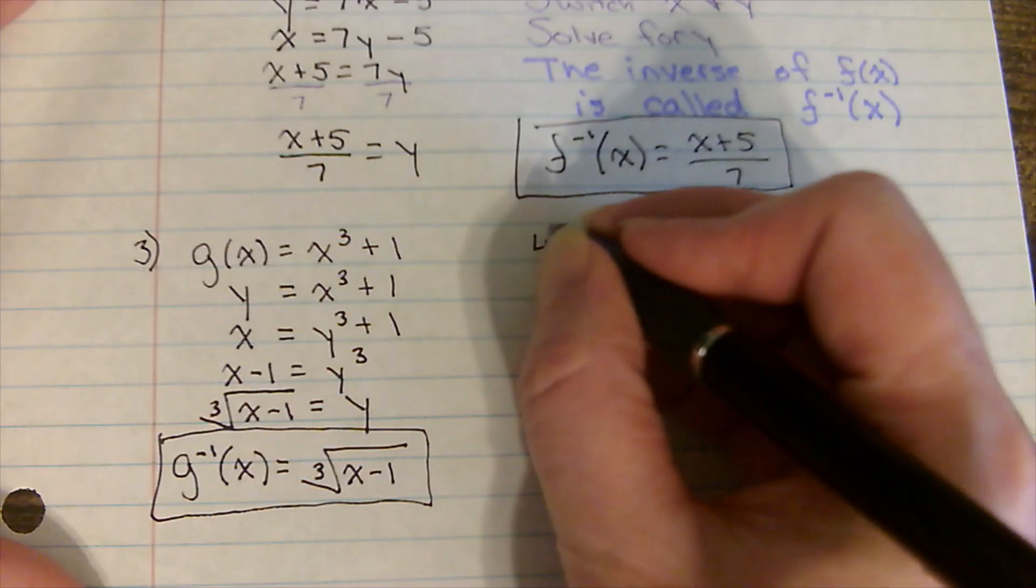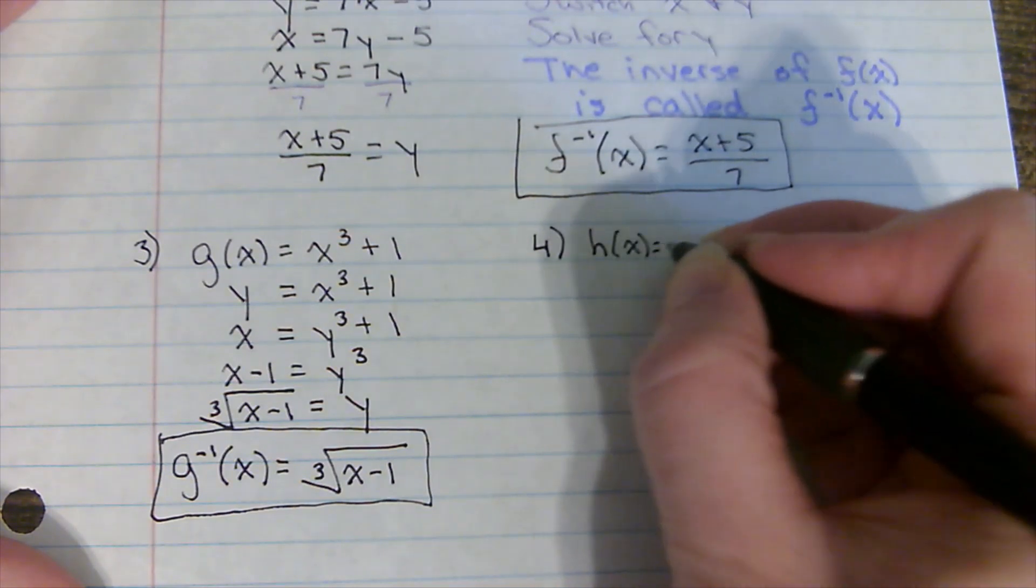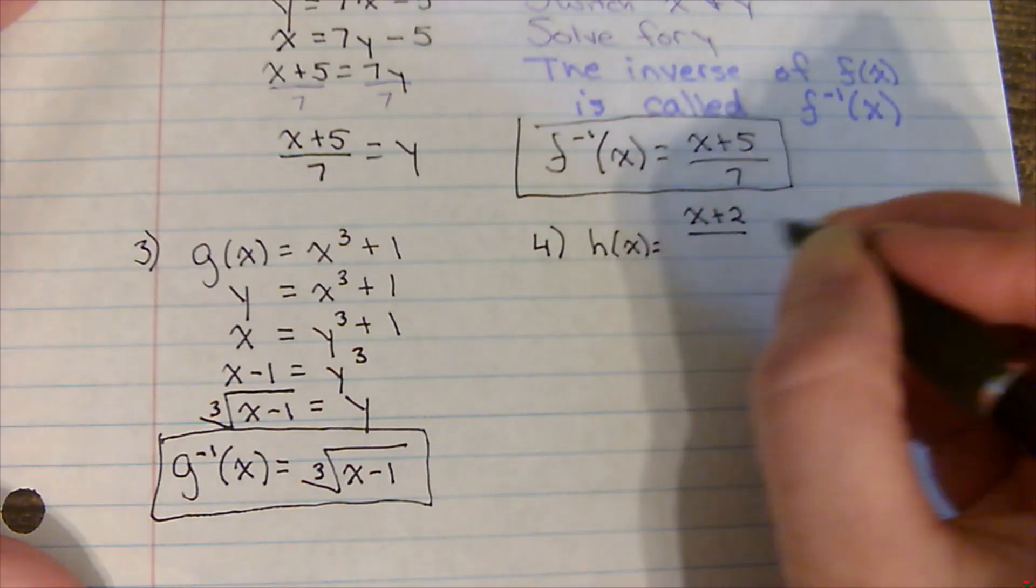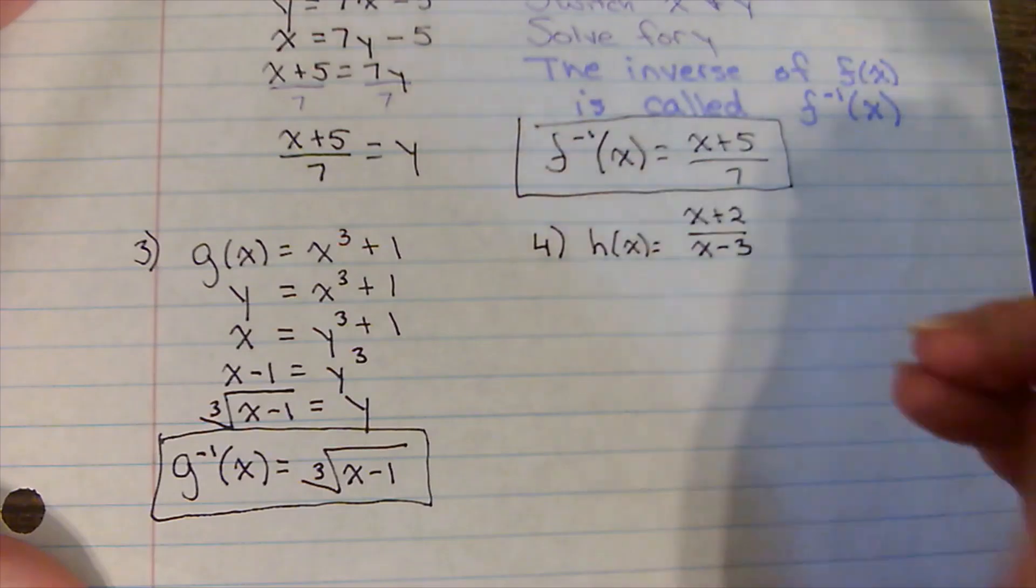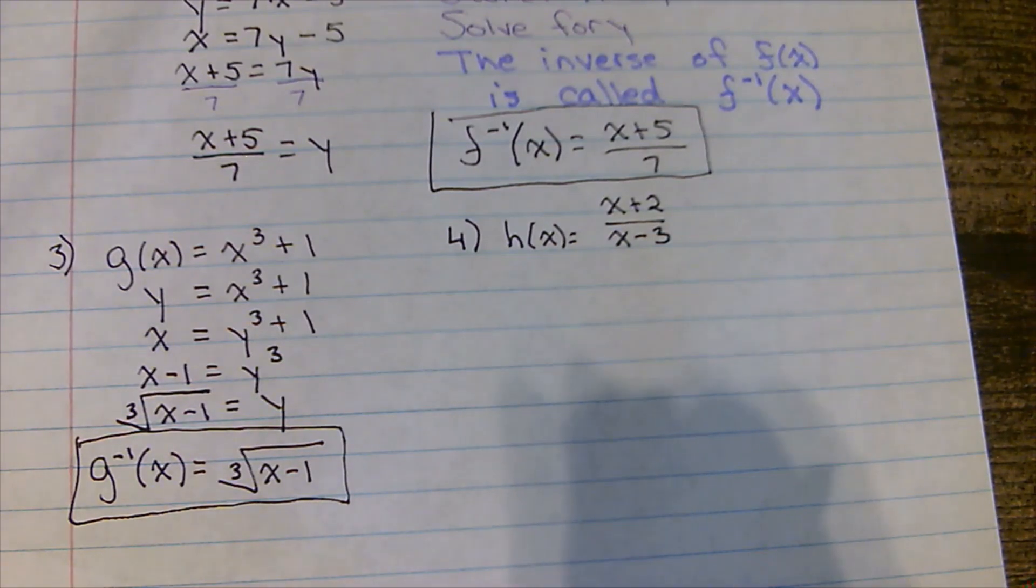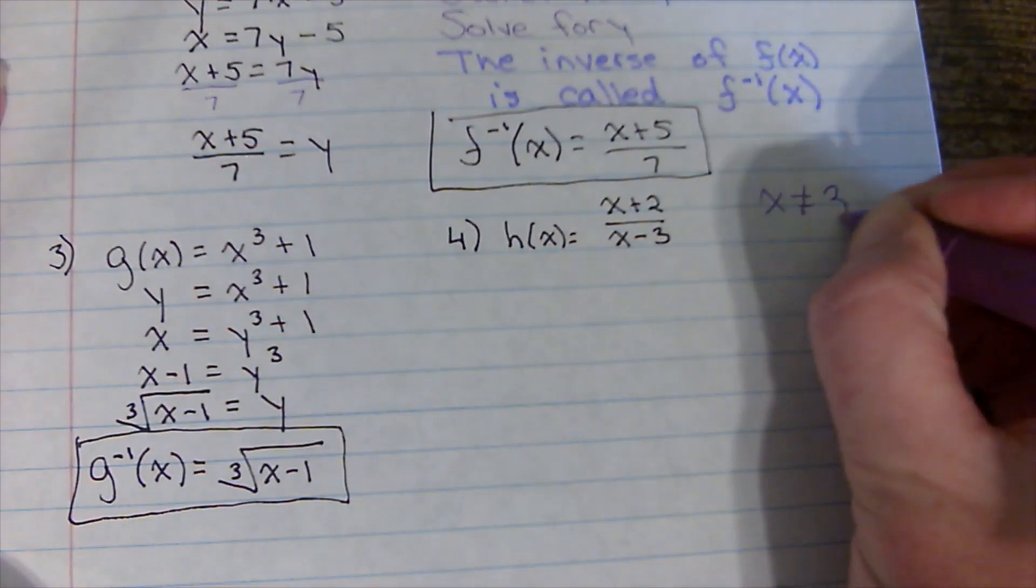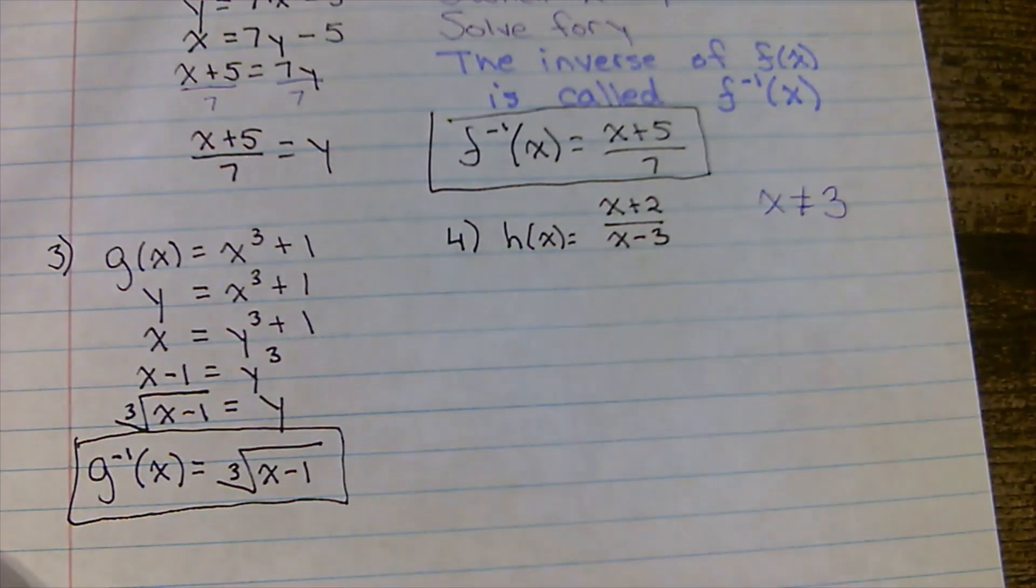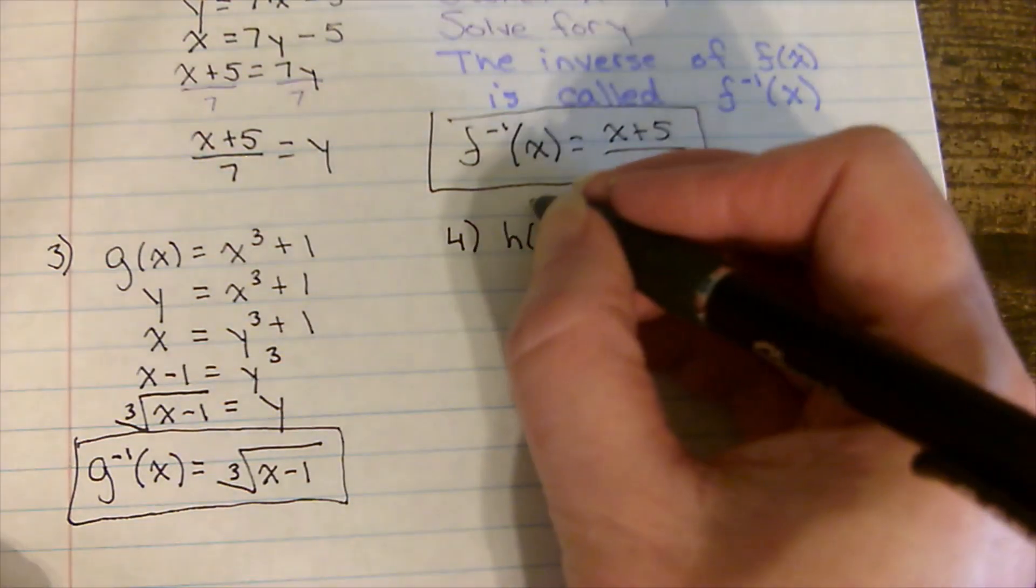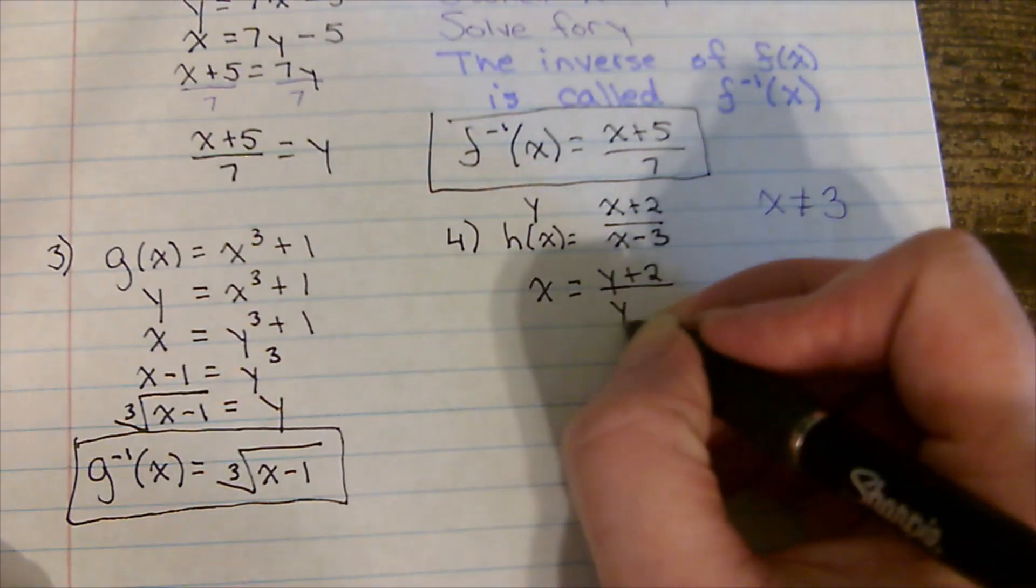One more. Now when I write this, there's something I tend to write out to the side because I know there's something x can't be. So you'll see this on homeworks and stuff too, problems, where if there's a fraction, you'll see out to the side, x can't be whatever it can't be. X can't be three or I'm dividing by zero. So I want to state that at the very beginning. Now before I can switch, I'm going to call this y. And now I'm going to switch x and y. So this would be x equals y plus two over y minus three.